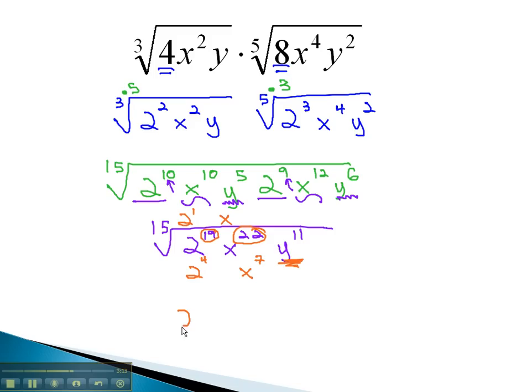This means outside the radical we have a 2x, and inside the 15th root we're left with 2 to the 4th, which is 16, x to the 7th, y to the 11th. This becomes our final solution.